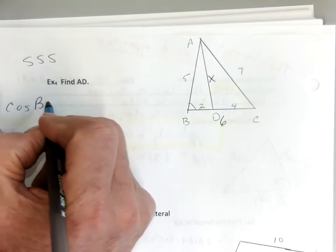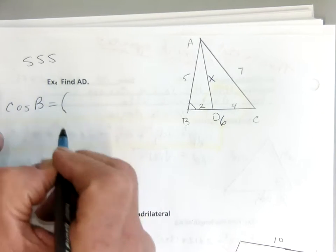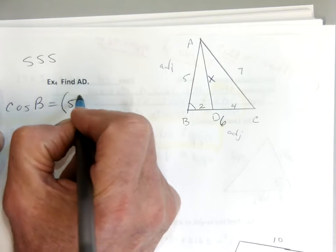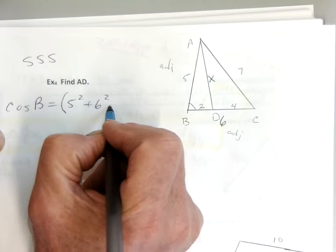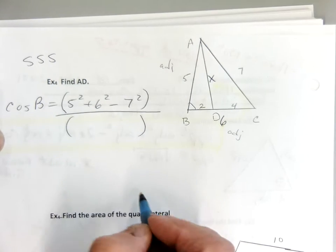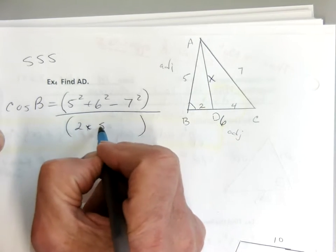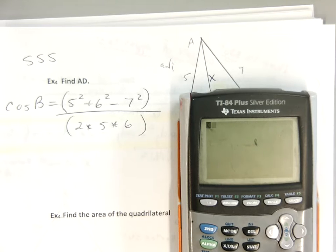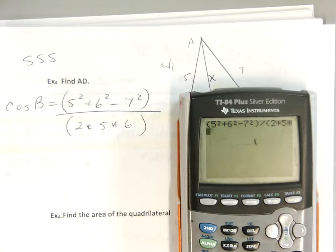Cosine of B equals parentheses — adjacent, adjacent, opposite: 5 squared plus 6 squared minus 7 squared — all over parentheses 2 times 5 times 6. So: parentheses 5 squared plus 6 squared minus 7 squared, close parentheses, divided by 2 times 5 times 6. I get a decimal, and then cosine inverse of that answer gives me about 78.5 degrees.